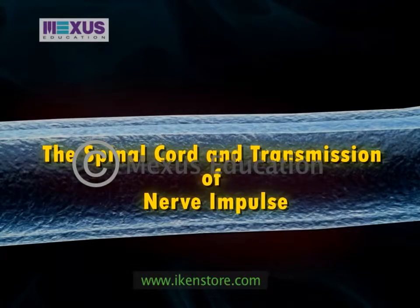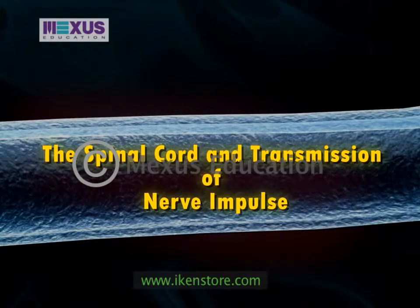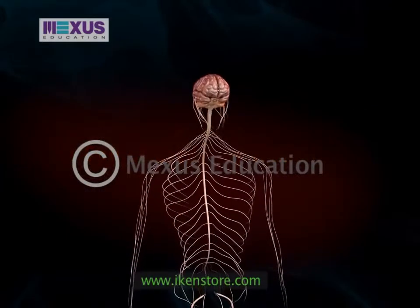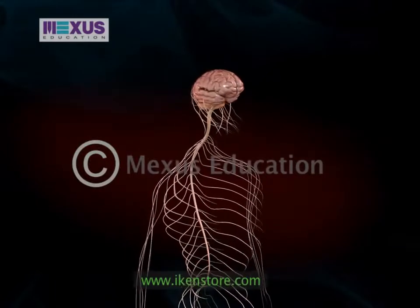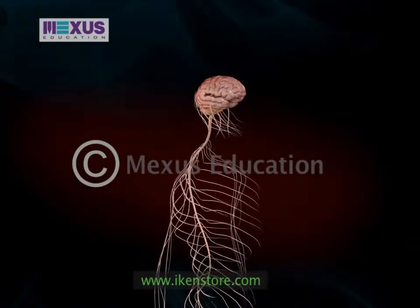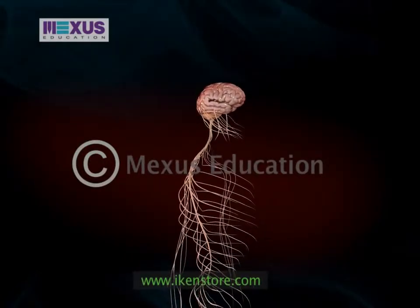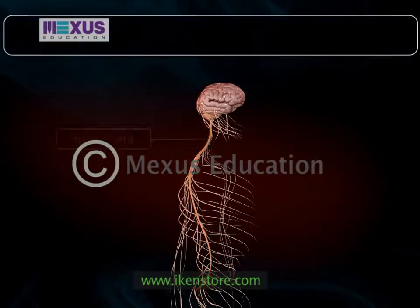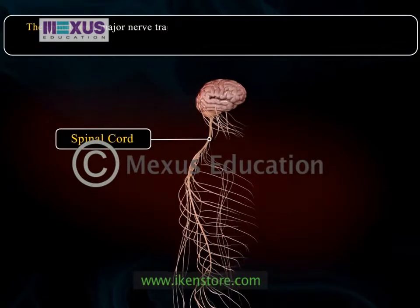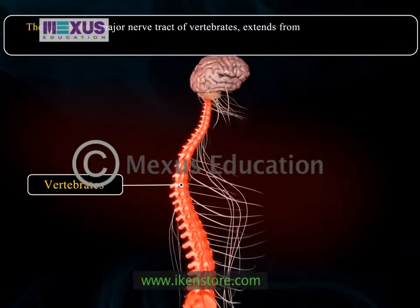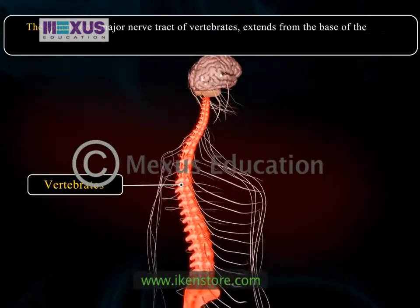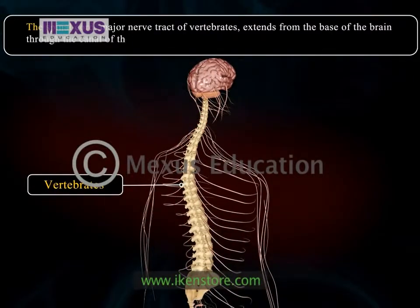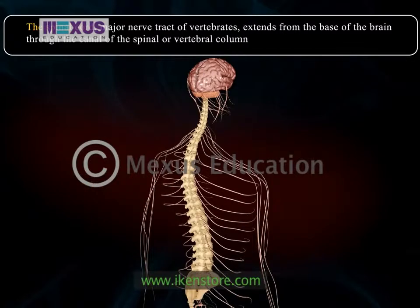The spinal cord and transmission of nerve impulse. The second and the most important part of the central nervous system is the spinal cord. The spinal cord, a major nerve tract of vertebrates, extends from the base of the brain through the canal of the spinal or vertebral column.